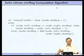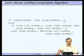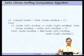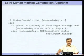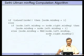The Sethi-Ullman minreg computation: if the node is a leaf, minreg = 1. If the left and right children sub-trees have equal minreg values, then node.minreg = node.left.minreg + 1. Otherwise, node.minreg = max(node.left.minreg, node.right.minreg). This is the standard Sethi-Ullman minreg computation algorithm.